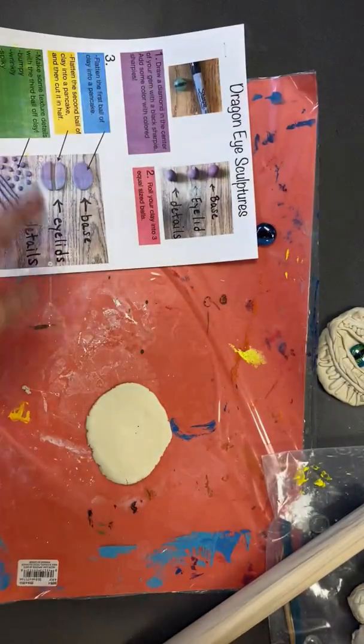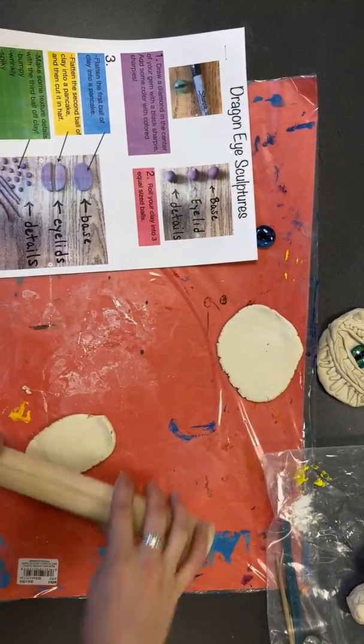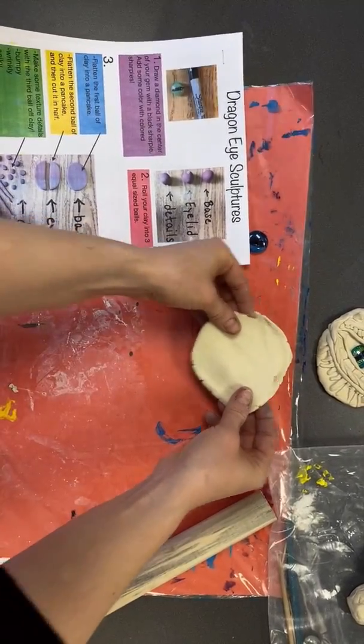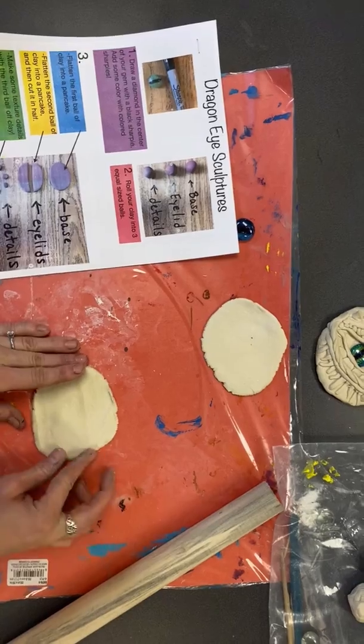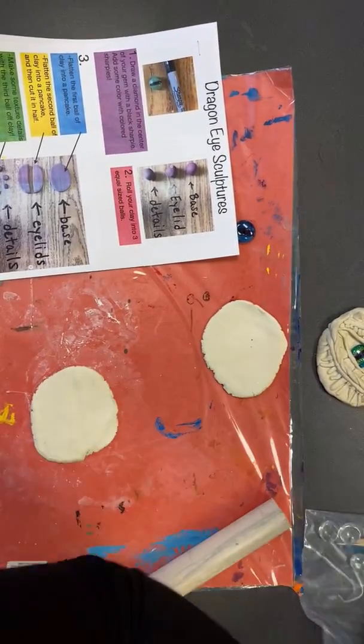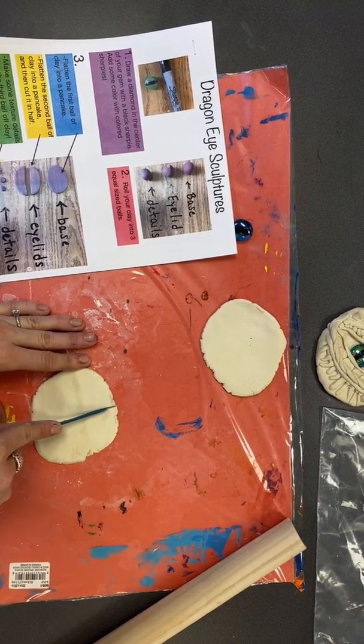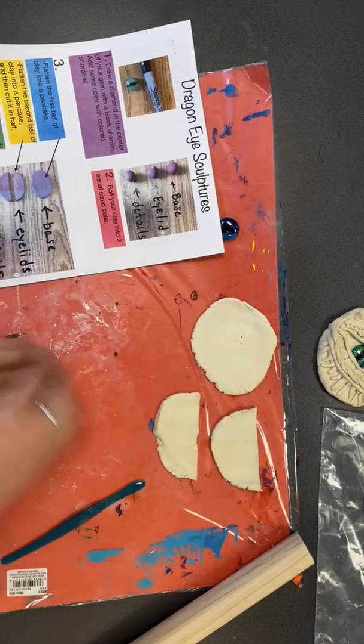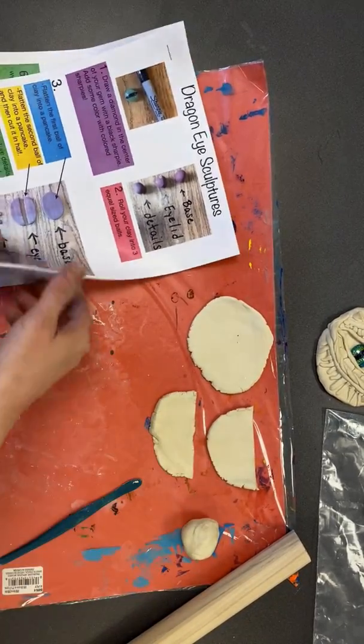Next it says flatten the second ball of clay into a pancake, then cut it in half. So these are going to be the eyelids. So I'm going to put my first pancake aside, flatten my second pancake. I want this one to be about the same size as the first one. So roll it out a bit and then measure it. Push your sides in so it's nice and even. And then I'm going to use one of the tools in my bag, this little plastic knife, and I'm going to cut this in half. So these two pieces, let's put these aside. Then the next ball I'm going to use for my texture details. So I can just put this aside for now. I'm going to build the rest of the eye before I make those details.